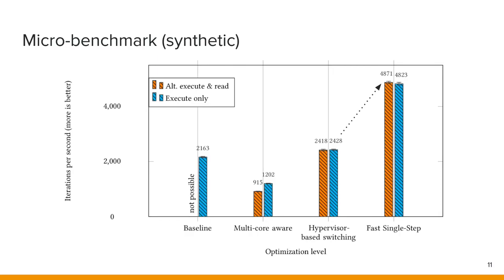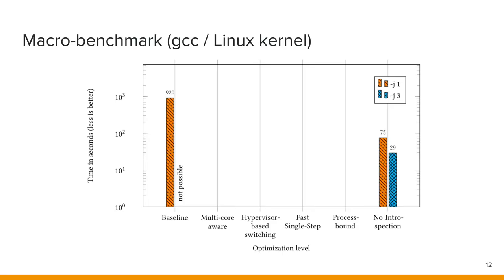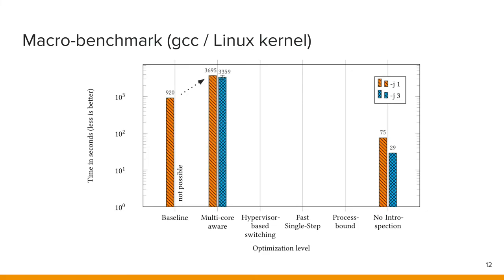Second, we have a benchmark on real-world scenarios. Here, we trace all system call handlers in the monitored virtual machine while compiling the Linux kernel with GCC, considering both single-threaded and multi-threaded compilation. Initially, we observe an 11x slowdown due to VMI. Furthermore, multi-threaded measurement is impossible with the traditional approach since the breakpoint must be removed during single-stepping, which would also affect other cores. With our unoptimized implementation, we enable multi-threaded execution, though it is slower than the naive approach. With our optimizations, we already perform better than the baseline even without multi-threading.